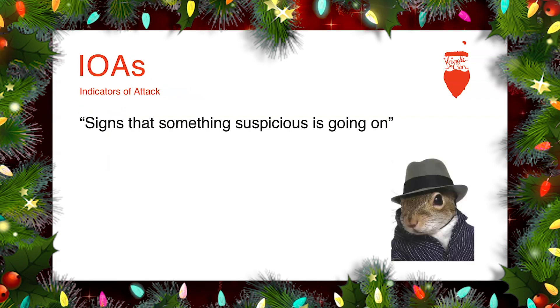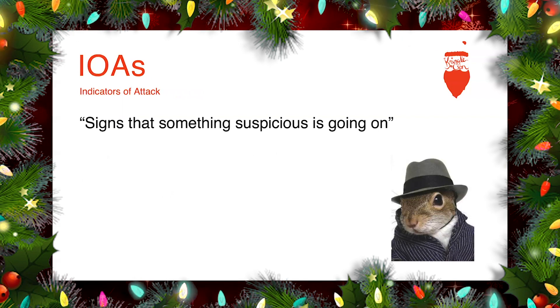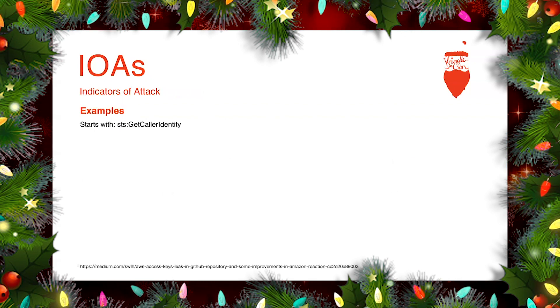Now we're going to dive into IOAs, or Indicators of Attack — signs that something suspicious is going on. They help us detect the bad guys once they're in. I always like to start examples with GetCallerIdentity because that's basically the "who am I" of the cloud. A lot of attackers run it just to figure out where they landed in an environment, test the credentials, and see what their user or role name is.